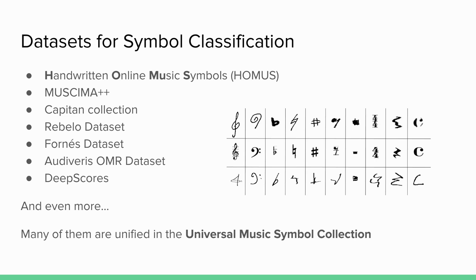And if you want just to have a big bunch of data, there is also a collection which collects all of these — the Universal Music Symbol Collection, which consists of 90,000 music symbols, both handwritten and typeset. You can filter out which symbols you want. Go ahead and use them for training, for example, a deep convolutional neural network.